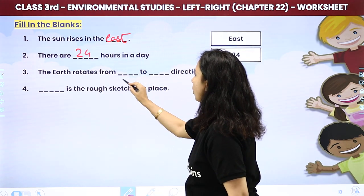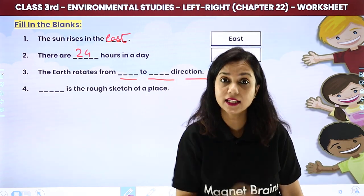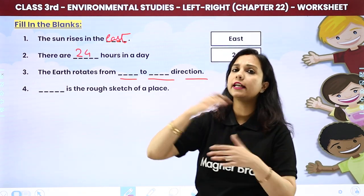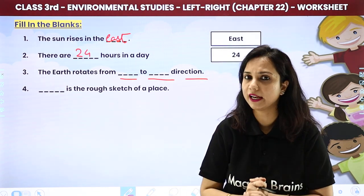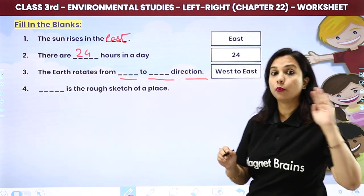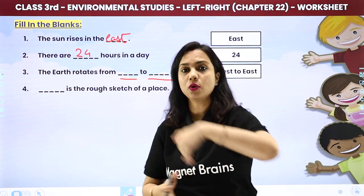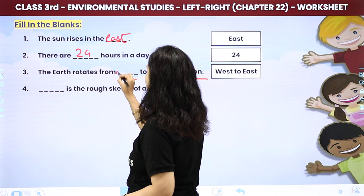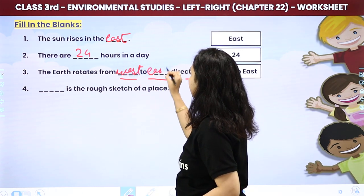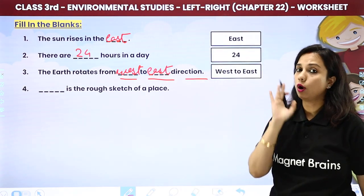The earth rotates from dash to dash direction. Our planet Earth — which direction does it rotate? It rotates from west to east. So you will write west to east. Always remember: Earth rotates in the west to east direction.